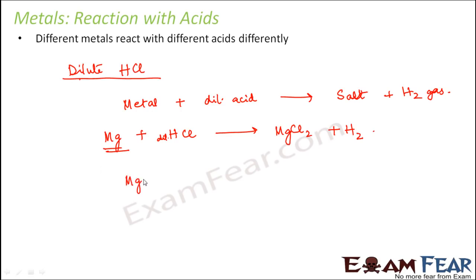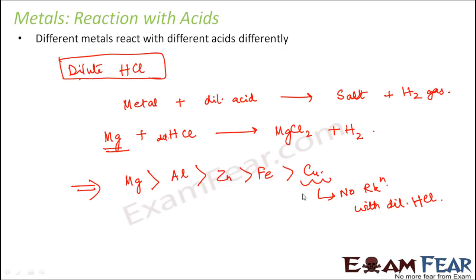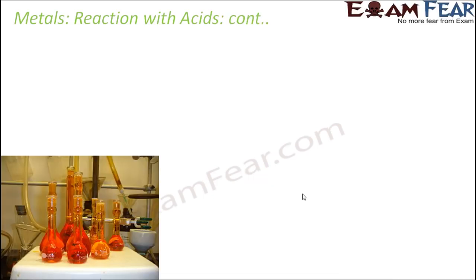If you arrange the metals in terms of reactivity, magnesium has the highest reactivity, then comes aluminum, then zinc, then iron, and then copper. In fact, copper doesn't react — there is no reaction of copper with dilute HCl. So even with the same acid, the reactivity of different metals is different. On one hand, magnesium is highly reactive with dilute HCl; on the other hand, copper doesn't react at all.